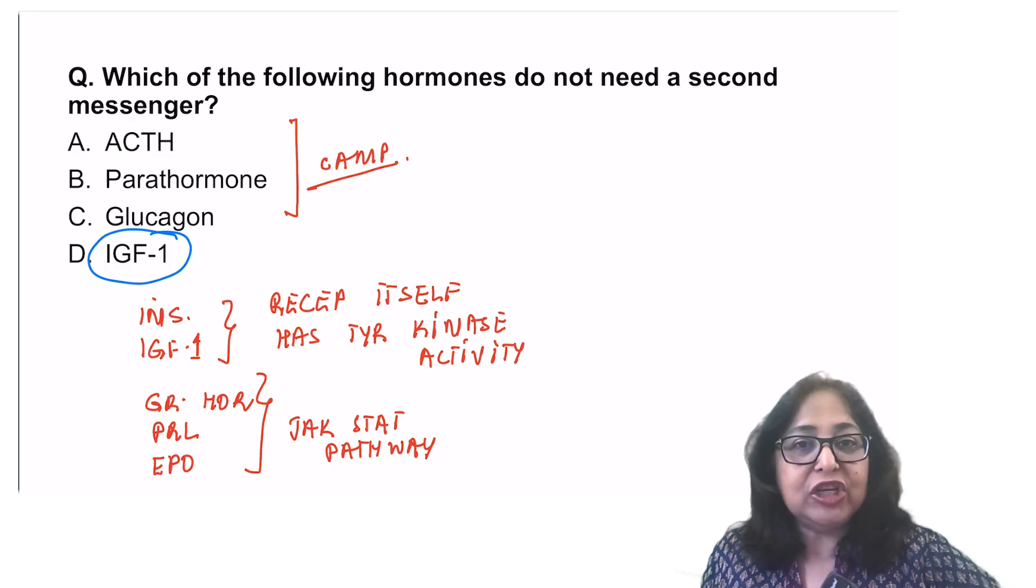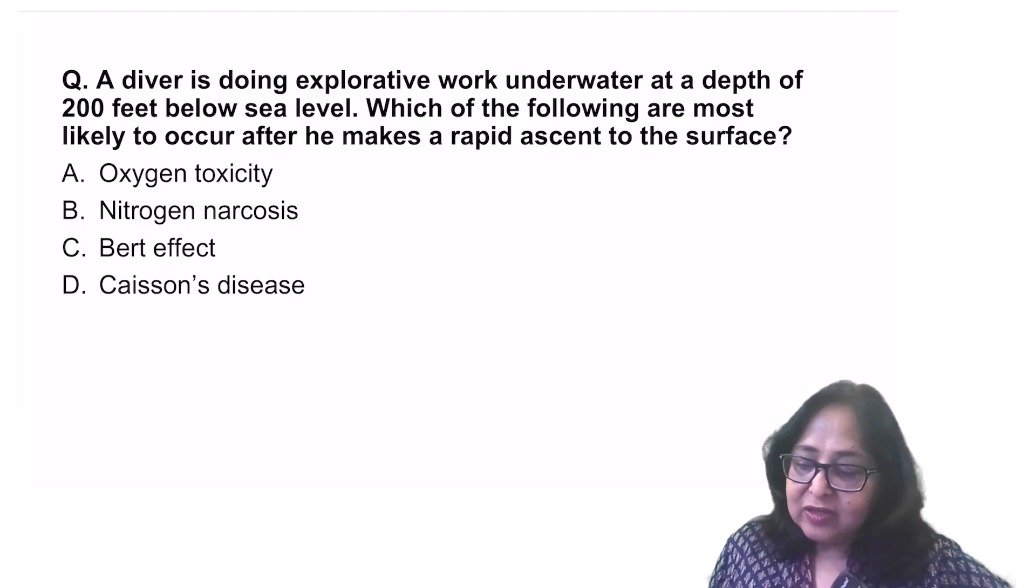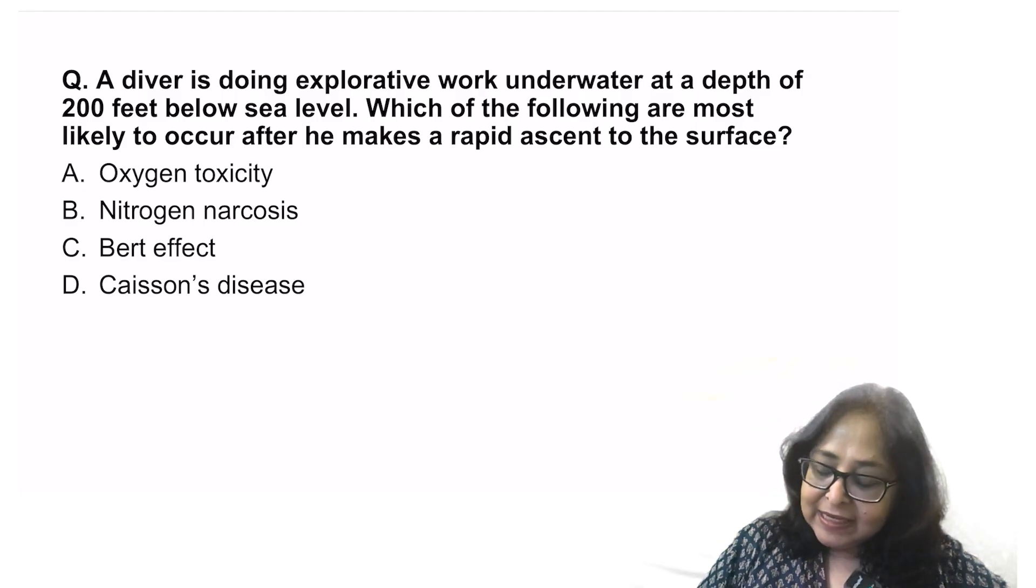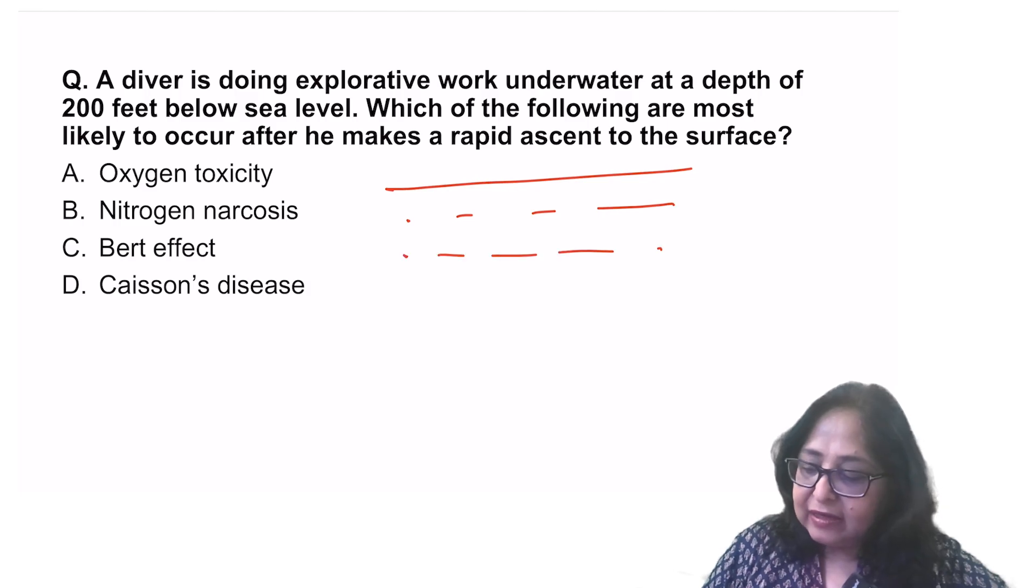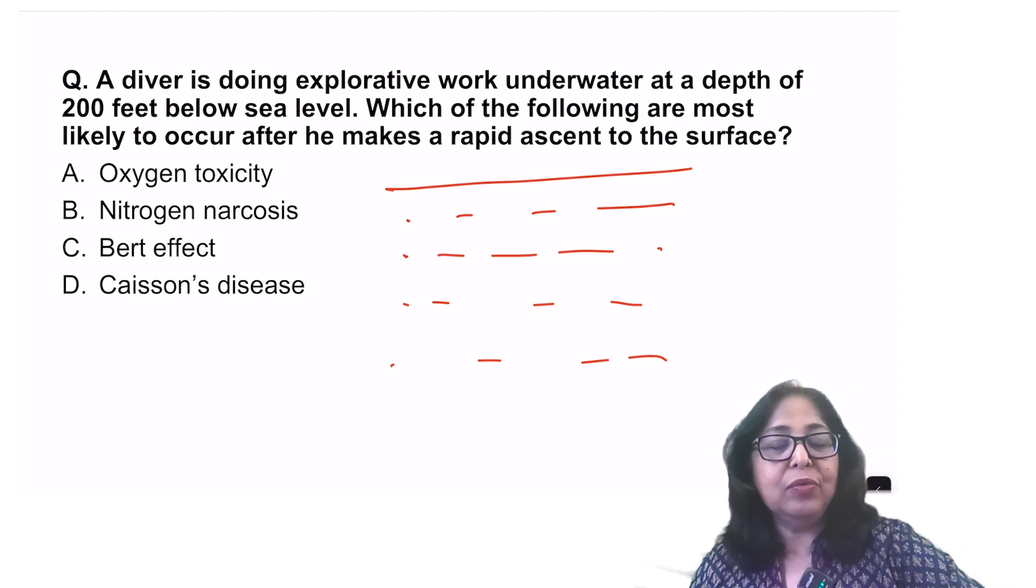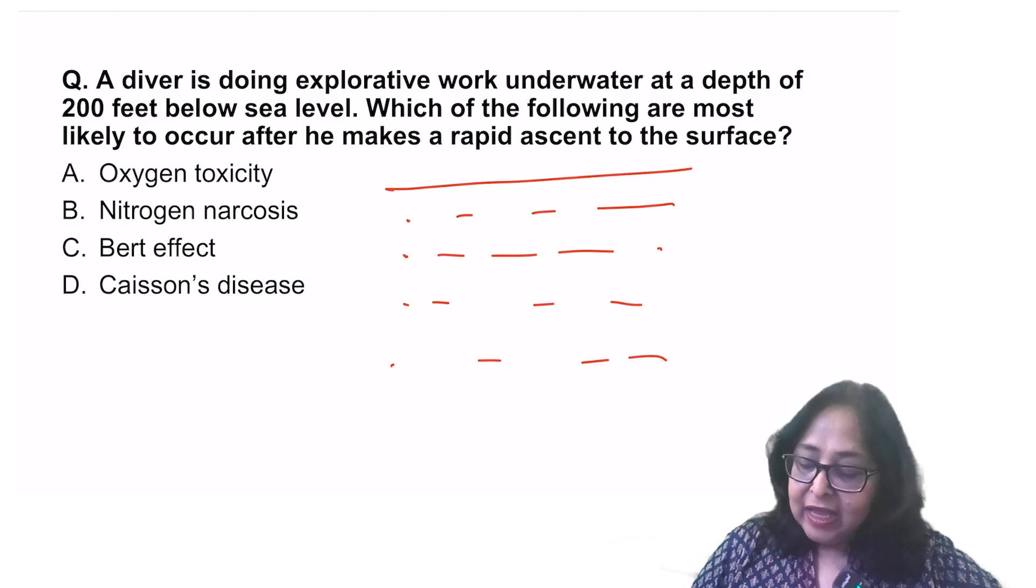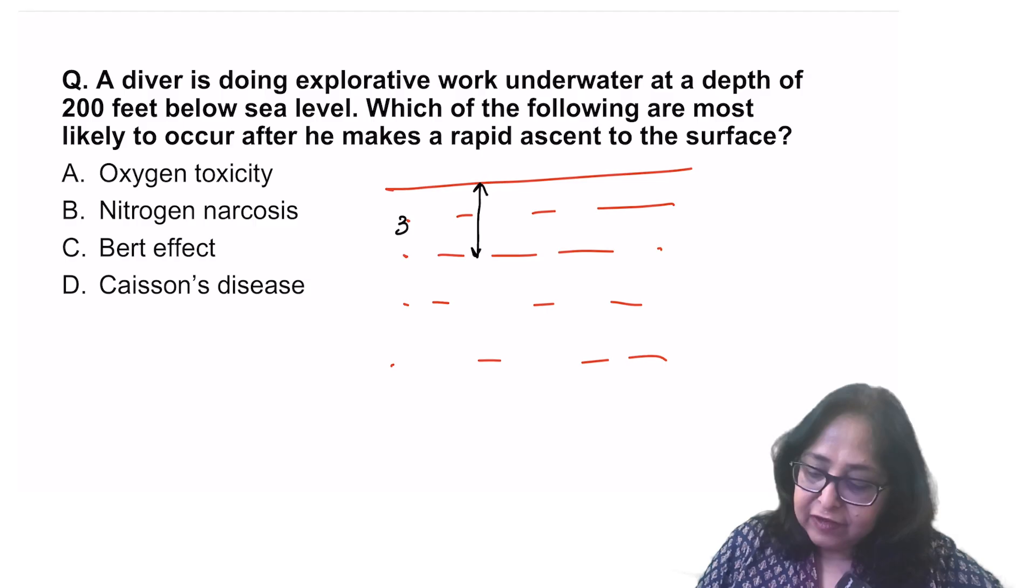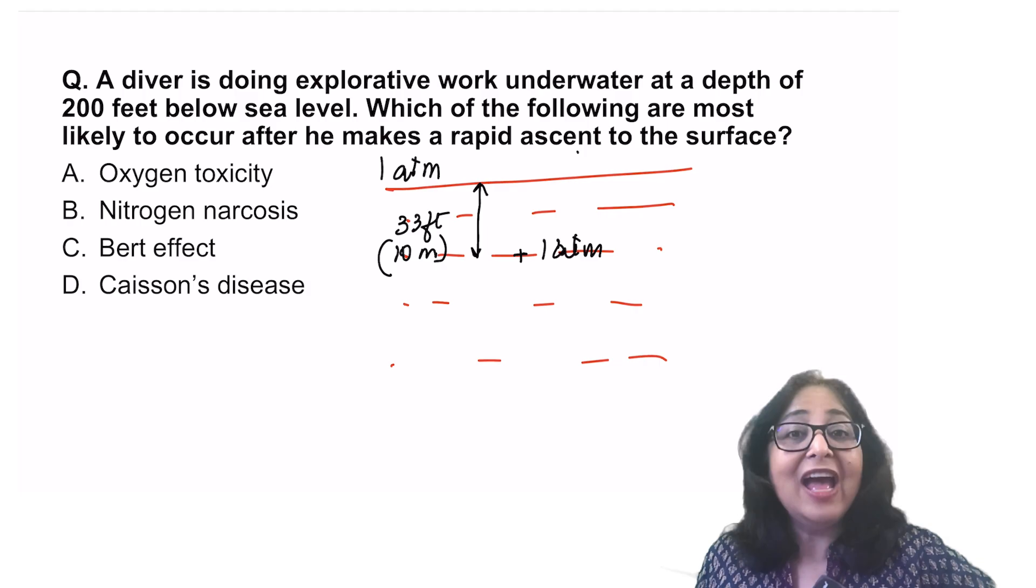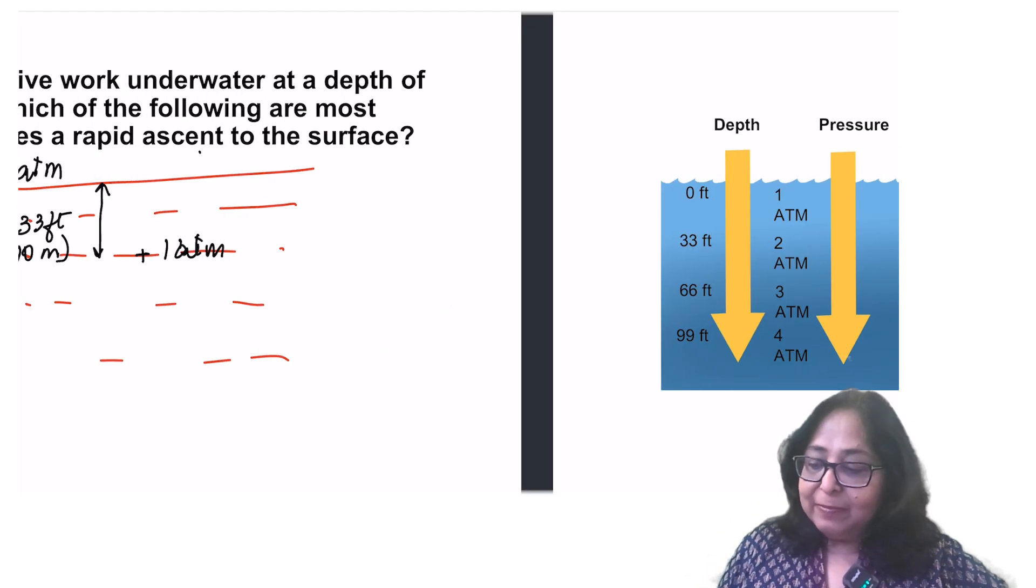A diver is doing explorative work underwater at a depth of 200 feet below sea level, which of the following are most likely to occur after he makes a rapid ascent to the surface. Now please understand, when a diver is working underwater, the surrounding pressure keeps on increasing. The deeper you go, the surrounding pressure will increase even more. For every 33 feet or 10 meters below sea level, the pressure increases by one atmosphere. Remember, at sea level, the pressure is one atmosphere. So every 33 feet that you go below sea level, the pressure will increase by one atmosphere.